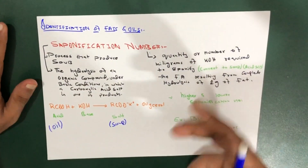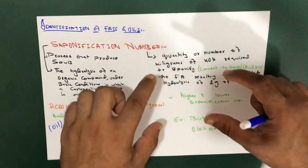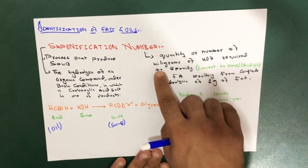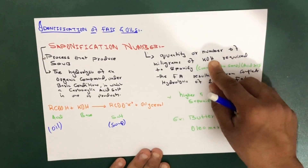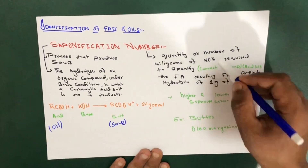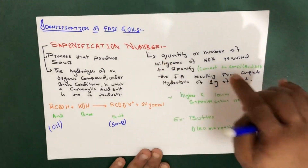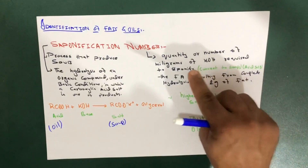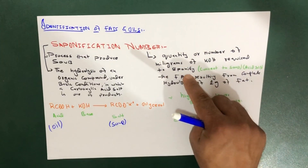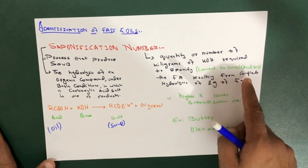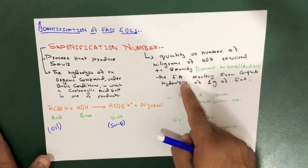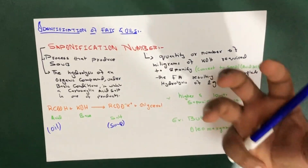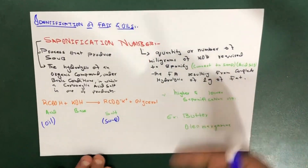Now let's move towards the saponification number. The saponification number is the number of milligrams of potassium hydroxide required to saponify — meaning required to convert to soap or acid salt — the fatty acid. So the saponification number is the quantity or number of milligrams of potassium hydroxide required to saponify the fatty acid, which means to convert it into soap.